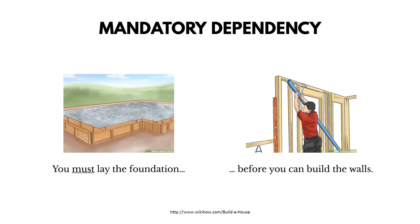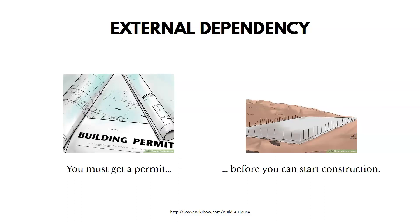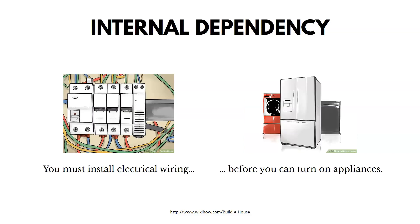Here's a mandatory dependency example: when constructing a home, you must lay the foundation before you can build the walls. Discretionary: you should paint before you install the appliances — it's not required, but it's a good idea and much easier. External: you must get a permit before you can start construction — an outside group is requiring something. Internal: you must install electric wiring before you can install your appliances — that's required internal to your project team, not necessarily an external requirement.